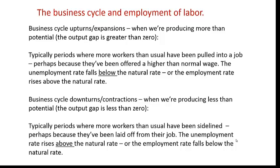Now let's think about the relationship between the business cycle and the employment of labor. During an upturn or expansion, we're producing more than potential and the output gap is greater than zero. These are typically periods where more workers than usual have been pulled into a job, often at a higher than normal wage, so the unemployment rate falls below the natural rate. Conversely, during downturns or contractions, we're producing less than potential, the output gap is less than zero, more workers have been sidelined or laid off, and the unemployment rate rises above the natural rate.